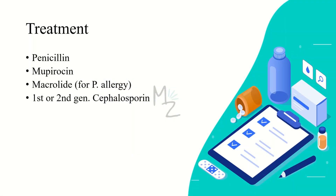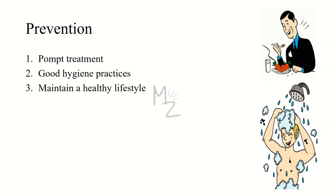Treatment: diseases caused by strep pyogenes are treated with penicillin. Skin conditions are treated with the topical antibiotic mupirocin. Macrolides can help where the person is resistant to penicillin, and first- or second-generation cephalosporins are also used. Prevention: strep pyogenes infections can be controlled with prompt treatment, maintaining a healthy lifestyle, and practicing good hygiene.